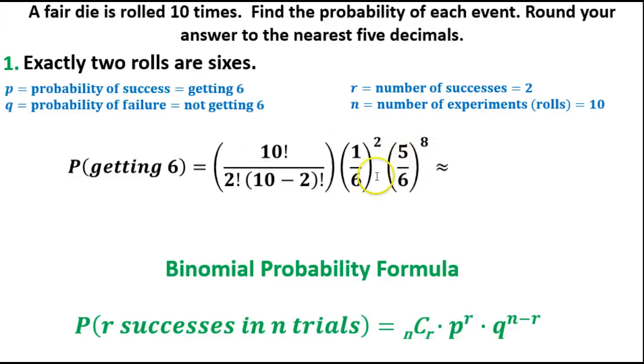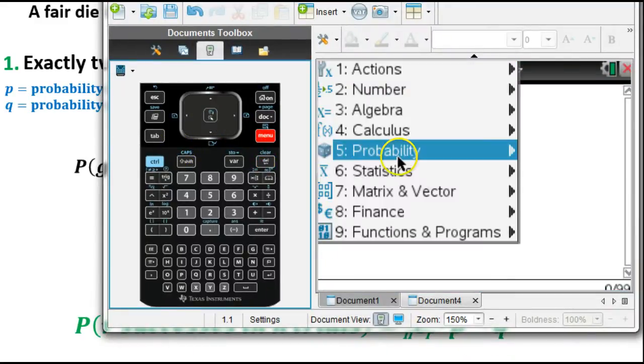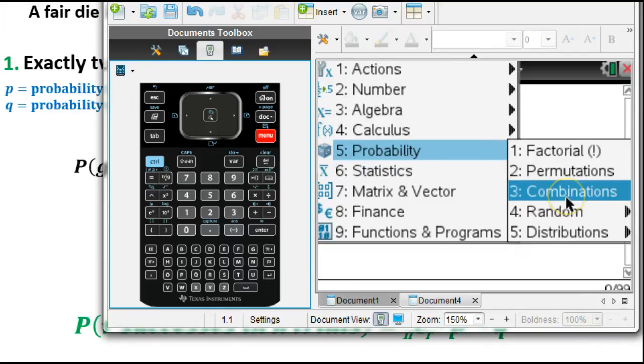Now all we're going to do is plug this into our calculator. You can plug it in exactly as you see it here. I'm going to show you a shortcut using combinations. We know this is ten choose two. We'll do it on both calculators, TI-84 and TI-Inspire. We'll bring in the TI-Inspire first. On the TI-Inspire, we can go to Menu, Probability, Combinations.